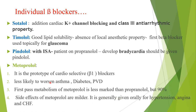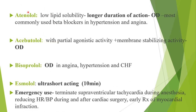Metoprolol has less marked first-pass metabolism than propranolol; 90% of side effects are milder. It is given orally for hypertension, angina, and CHF. It has low lipid solubility and longer duration of action, and is most commonly used once daily. Acebutolol has partial agonistic activity and membrane-stabilizing activity. Bisoprolol is used once daily in angina, hypertension, and CHF. Esmolol is ultra-short acting (half-life ~10 minutes) and used in emergencies: terminating supraventricular tachycardia during anesthesia, controlling heart rate during and after cardiac surgery, and early treatment of myocardial infarction.